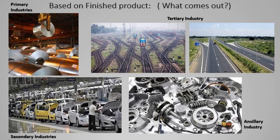Based on finished product, we have primary, secondary, tertiary, and ancillary industries. Primary industries are the most important — iron and steel industry — because every other industry depends on it. Every industry needs machines, and all machines are made of iron and steel. So if there is no iron and steel industry, there would be no other industry.